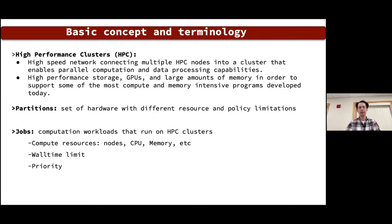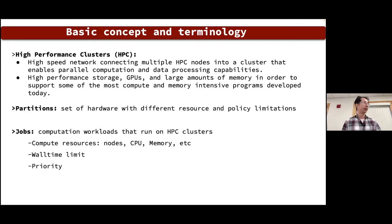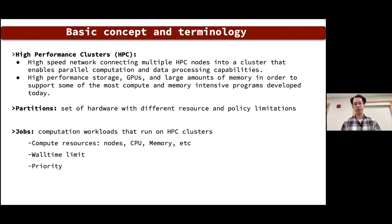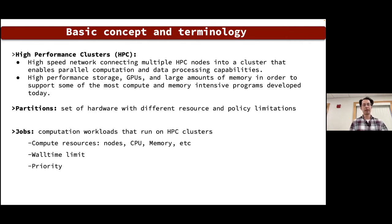Some basic concepts and terminology: HPC — High Performance Computing — is a high-speed network connecting multiple nodes into a cluster enabling parallel computation and data processing. It includes high-performance storage, GPUs, lots of CPUs, and large memory. A partition is a logical grouping of compute nodes by hardware characteristics or function, each with different resource and policy limitations.